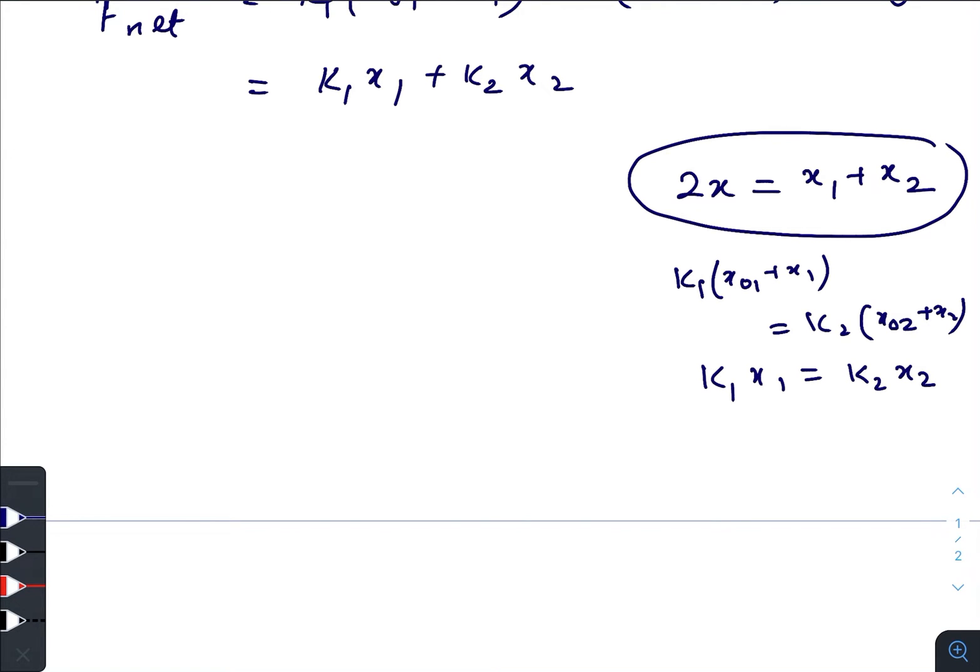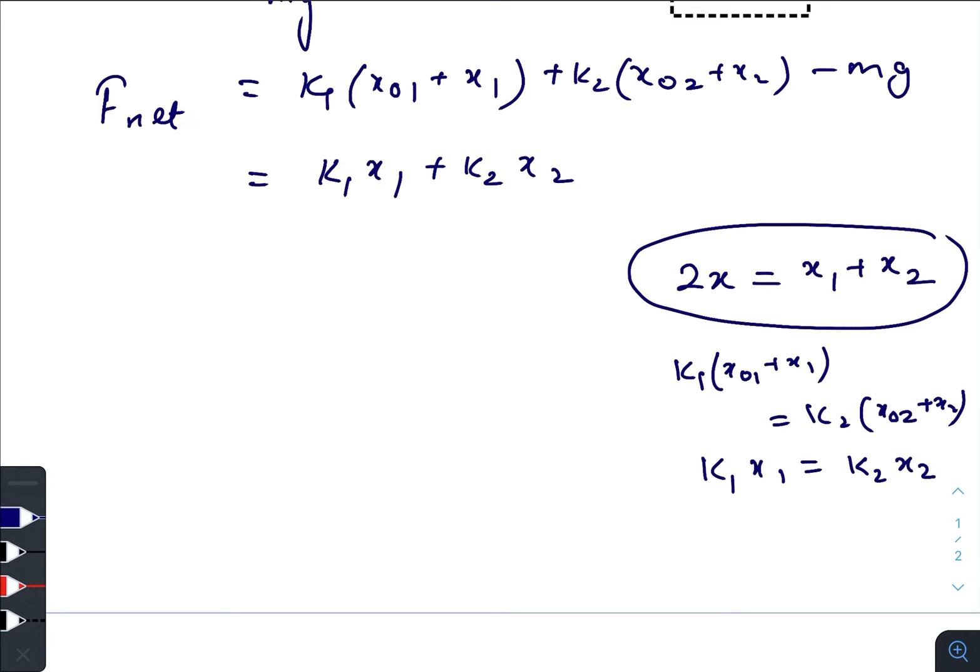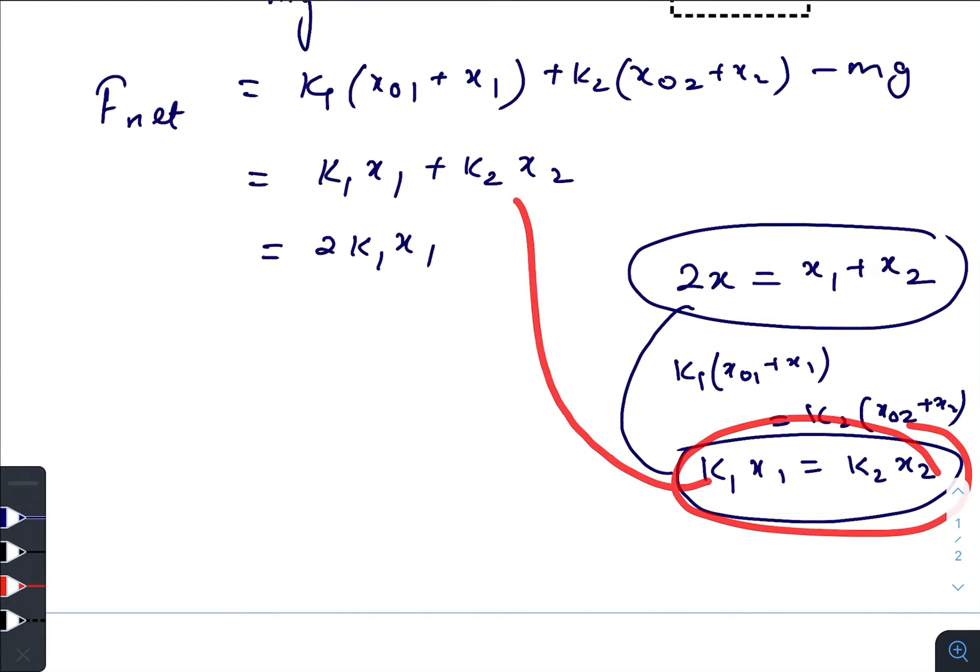To be more prominent, we need to write k₁(x₀₁ + x₁) equal to k₂(x₀₂ + x₂). We have already seen that k₁x₀₁ equals k₂x₀₂, so finally it gives us k₁x₁ equals k₂x₂. We will be using this equation, so our final target should be to write this whole thing as a function of x, that is the displacement of the block. We can write this as 2k₁x₁.